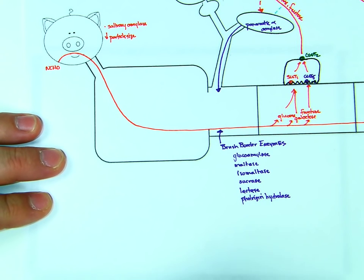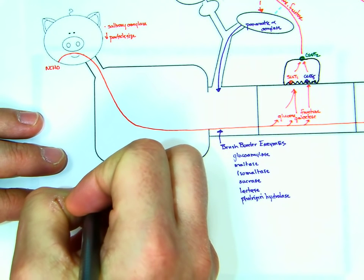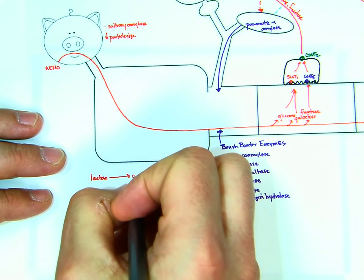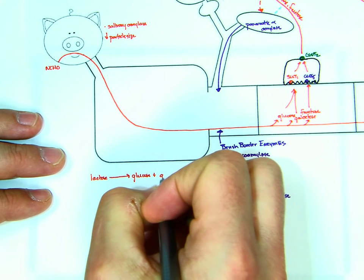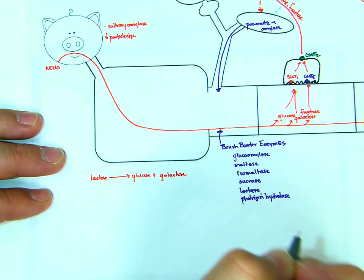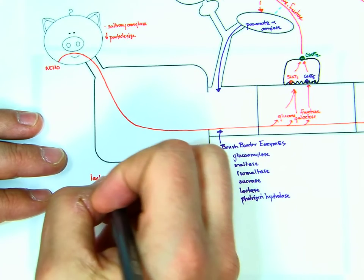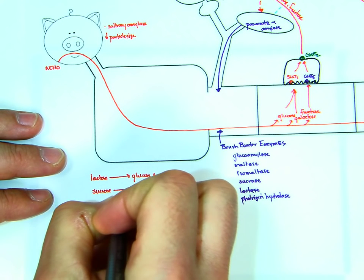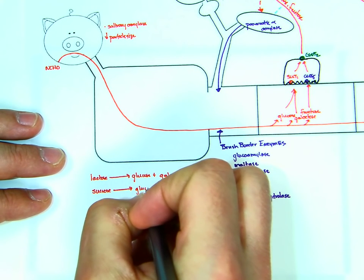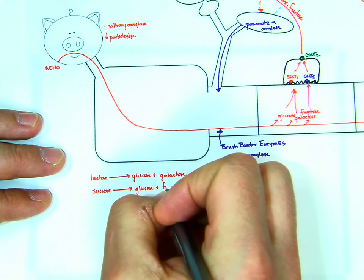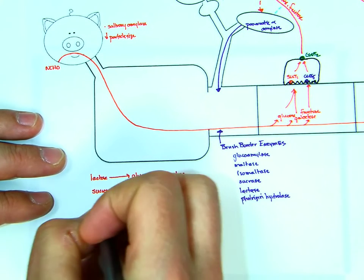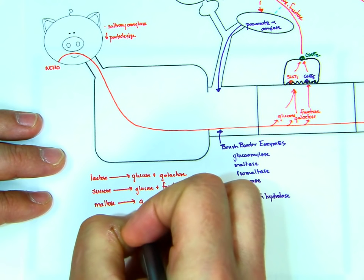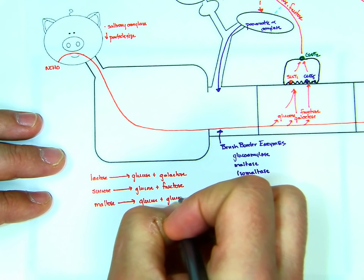Down here at the bottom, we want to make sure and capture some things. So lactose, just so we remember to study them, becomes glucose plus galactose. And that is done by, we'll come out to enzymes later. Sucrose becomes glucose, or is hydrolyzed into glucose plus fructose. Maltose becomes glucose plus glucose.